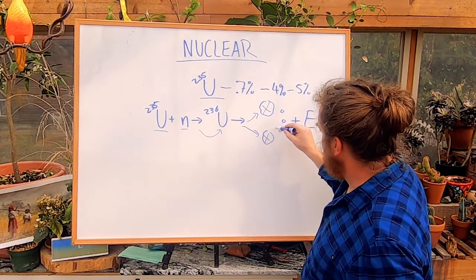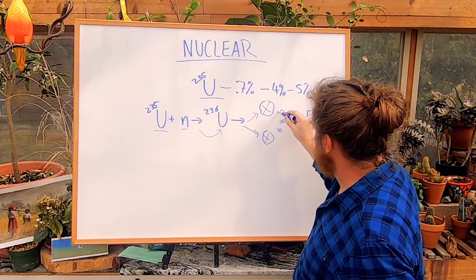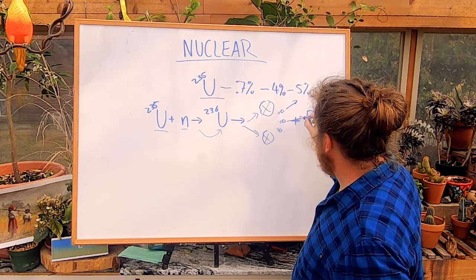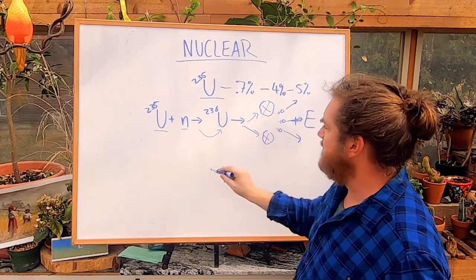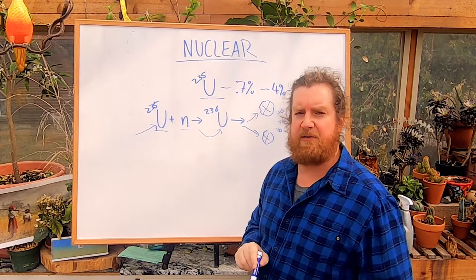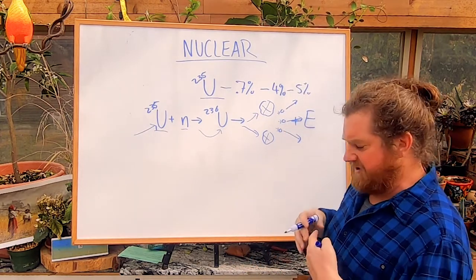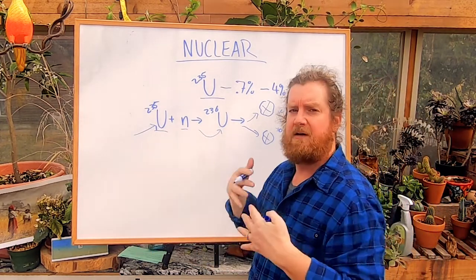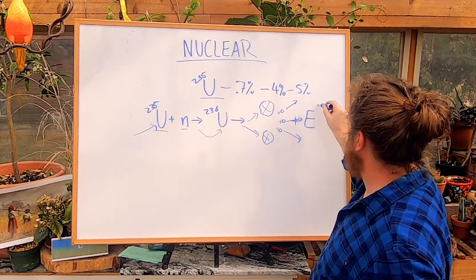And then actually three neutrons. Those three neutrons continue on to smash into other uranium-235 atoms, so it actually provides this kind of exponential reaction and energy is produced.